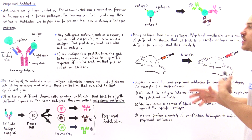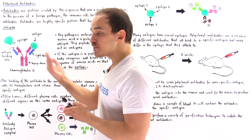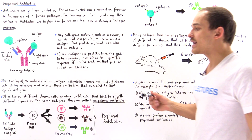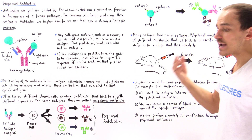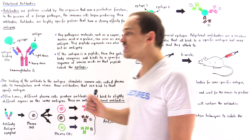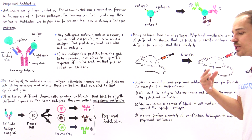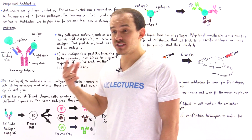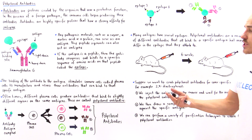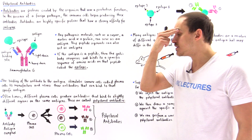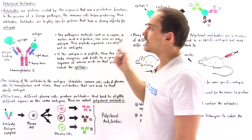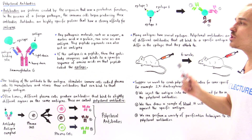Now we can use different types of purification techniques to basically isolate and study the polyclonal antibodies. For example, we can undergo cell fractionation and differential centrifugation to isolate all the proteins from that blood mixture. And then we can use affinity chromatography and gel electrophoresis to isolate those polyclonal antibodies and study them. So we see that it's not that difficult to actually isolate and form these polyclonal antibodies.